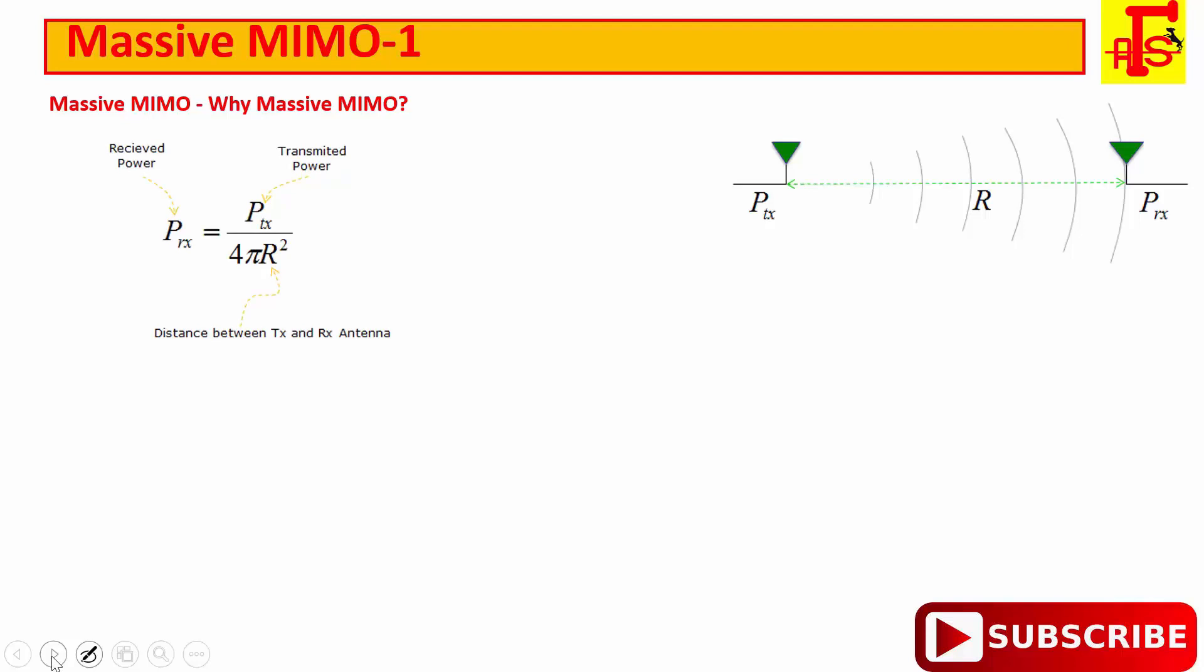To overcome this issue in high frequency by using larger number of transmission antenna. You can see here distance between the transceiver antenna and receiving antenna is R. Received power is inversely proportional to the square of the distance from the transmission antenna. That means PR is equal to PTX by 4πR². R is the distance between TX and RX antenna. If distance get increased by 2 times, then receive power get decreased by 4 times.